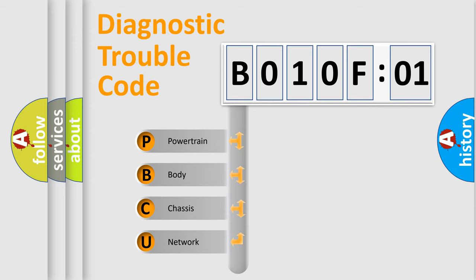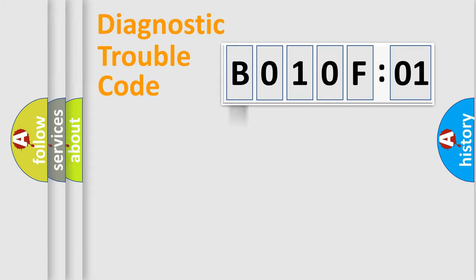We divide the electric system of automobile into four basic units: Powertrain, Body, Chassis, and Network. This distribution is defined in the first character code.